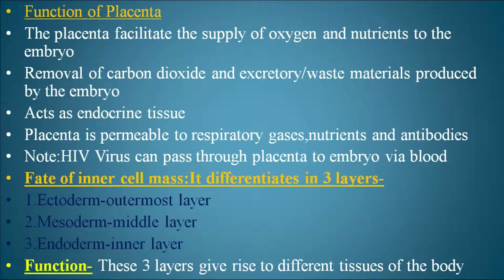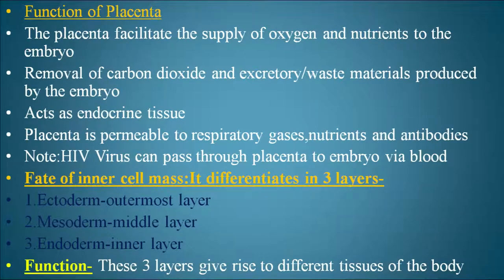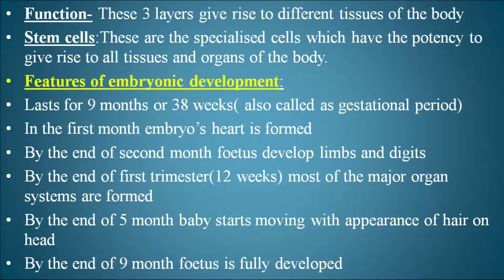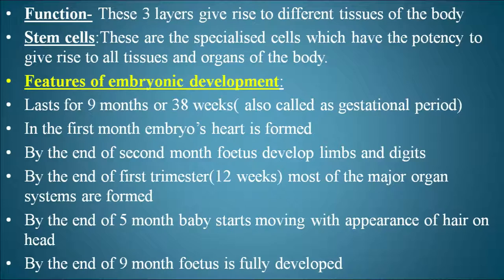The inner cell mass differentiates into three layers: the ectoderm (outermost layer), mesoderm (middle layer), and endoderm (innermost layer). These layers give rise to different tissues of the body. Stem cells are specialized cells with the potency to give rise to all tissues and organs of the body, and some people preserve stem cells from the newborn.